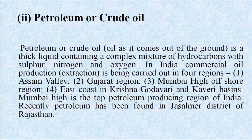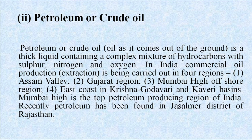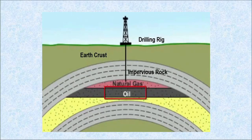Second is petroleum. Petroleum is a thick liquid containing a complex mixture of hydrocarbons with sulfur, nitrogen and oxygen. In India, commercial oil production is being carried out in four regions: Assam-Arakan, Gujarat region, Mumbai High offshore region, and East Coast in Krishna-Kaveri-Godavari basins. Mumbai High is the top petroleum producing region in India. Recently, petroleum has been found in Jaisalmer district of Rajasthan. Deposits of crude oil and natural gas are trapped together within the earth's crust under the sea floor. The crude oil is dispersed in pores and cracks in underground rock formations like water saturating a sponge, drawn out and pumped to the surface.